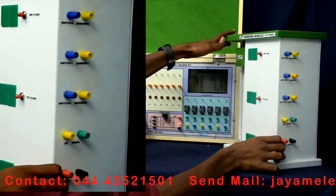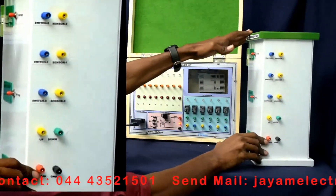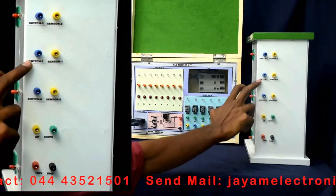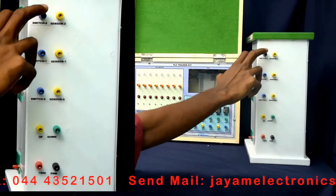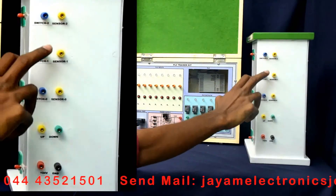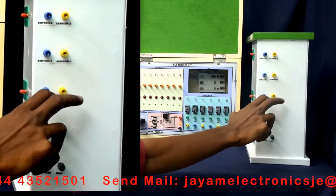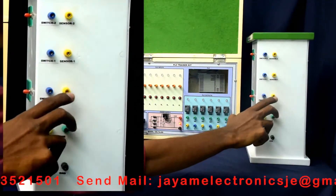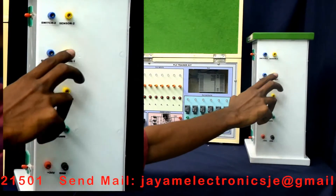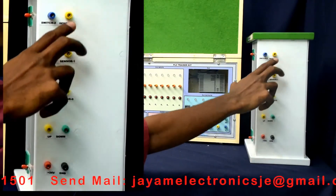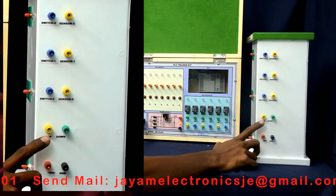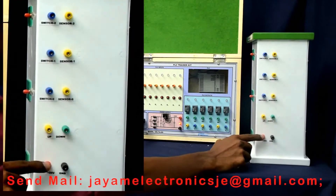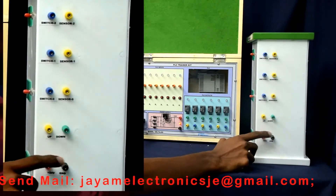We have to use the connections here. Switch 0, 1, 2 — these are the call buttons for ground floor, first floor, and second floor. These are the limit sensors: ground floor sensor, first floor sensor, and second floor sensor. Lift up and down. The operating voltage is 24 volts.